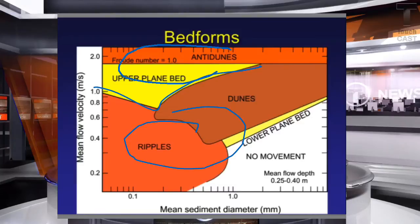In the lower regime, ripples, dunes, and lower plane beds are formed, which are stable compared to upper flow regimes, which are characterized by plane beds and anti-dunes. Flow in the lower regime is always subcritical, that is with a smooth water surface, while flow in the upper regime is supercritical, that is with an uneven surface.